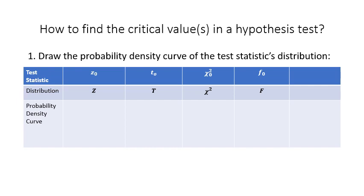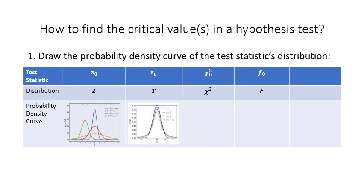For a z distribution, you sketch the standard normal probability density curve with mean zero and standard deviation one. For a t distribution, you use the degrees of freedom to sketch the t curve. For the chi-squared curve you also need the degrees of freedom — it is a right-skewed curve, as is the f curve. To sketch the f curve you need two degrees of freedom: degrees of freedom in the numerator and denominator, labeled dfn and dfd.